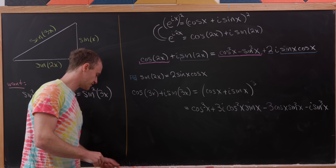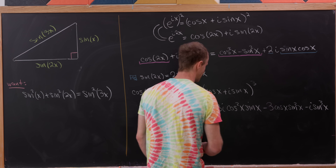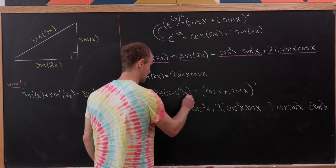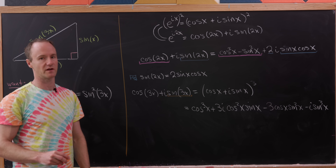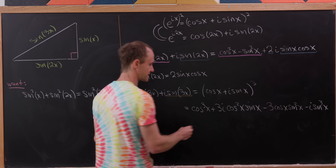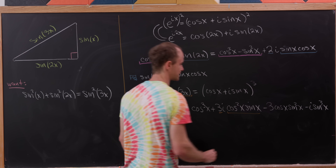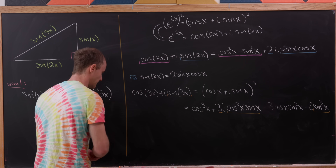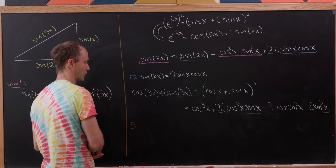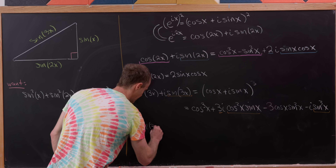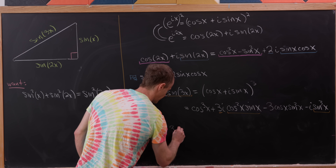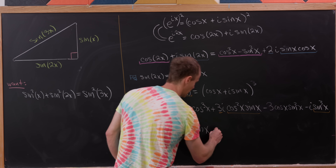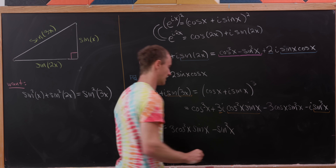Collecting real parts and imaginary parts, we only need the imaginary parts. On the left-hand side it's sine 3x, and on the right it's 3 cosine squared x times sine x, minus sine cubed x. So the triple angle formula is: sine of 3x equals 3 cosine squared of x times sine of x, minus sine cubed of x.